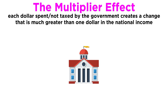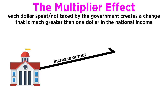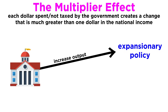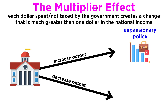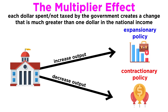Anytime the government tries to increase output in an economy, or speed up economic growth, that's known as expansionary policy. The main reason why a government would want to increase output is to keep unemployment low. Anytime it tries to decrease output, it's called contractionary policy. The reason why a government would want to decrease output, or slow down an economy, is to fight inflation.